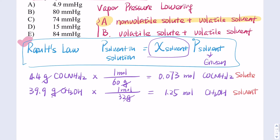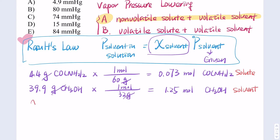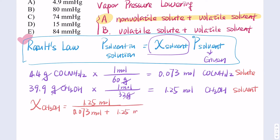Now we need to calculate the mole fraction of the solvent, CH₃OH. The mole fraction equals the moles of solvent divided by the total moles — that is, moles of solute plus moles of solvent. So we use 1.25 divided by the total, and we get 0.94 as the mole fraction of the solvent.